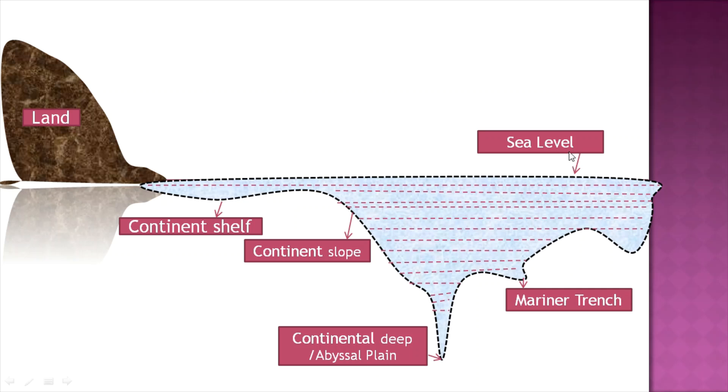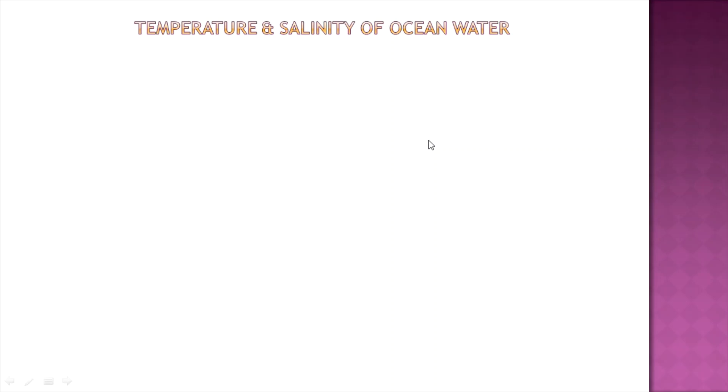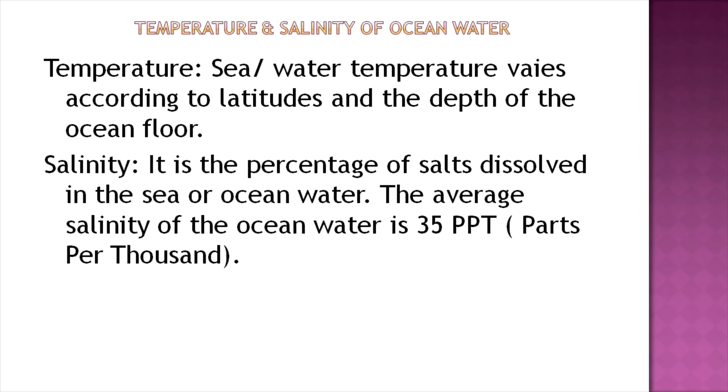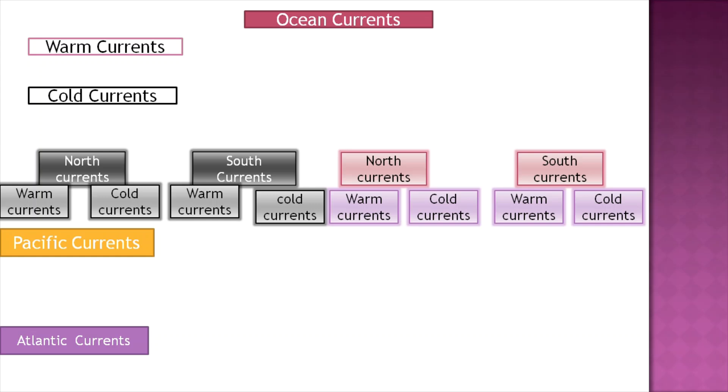Coming to temperature and salinity of ocean water: ocean water temperature varies according to latitude and the depth of the ocean floor. Salinity is the percentage of salts dissolved in sea or ocean water. The average salinity of ocean water is 35 parts per thousand.